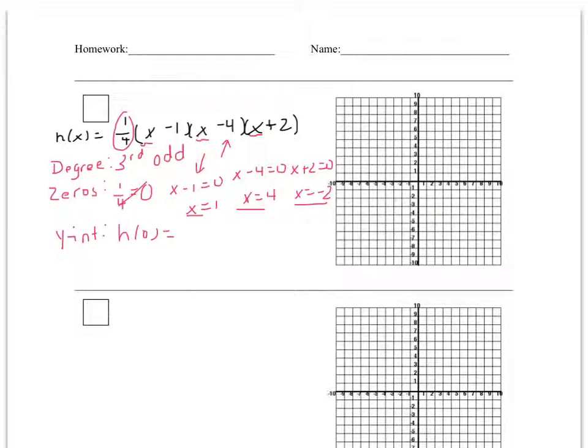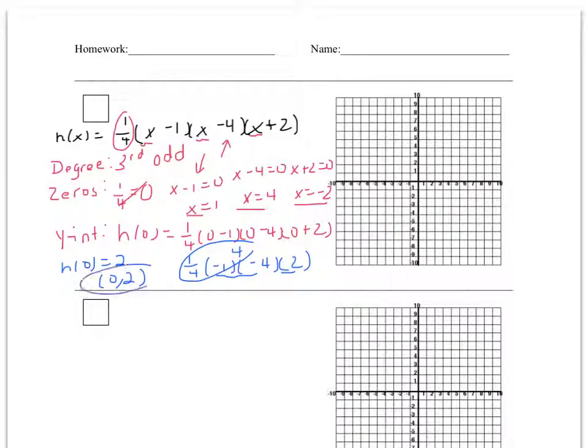We're going to let all the x's equal 0 in the function. So 1 fourth times 0 minus 1 times 0 minus 4 times 0 plus 2. So this simplifies to 1 fourth times negative 1 times negative 4 times positive 2. If I multiply negative 1 times negative 4, that's positive 4. 1 fourth of 4 is 1. 1 times 2 is 2. So this product, h of 0 equals 2. So I have a y-intercept at 0, 2.